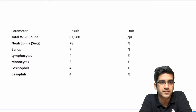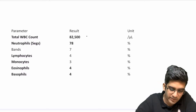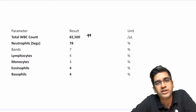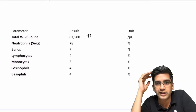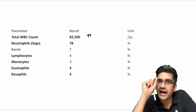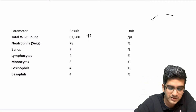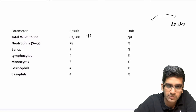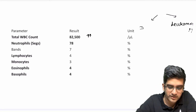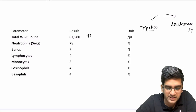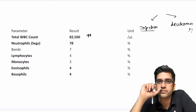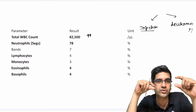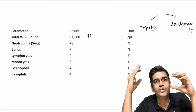The WBC count is definitely elevated — 82,000 is very, very high. The normal WBC count is somewhere around 10,000–11,000 in an adult. So I have one simple question: can this be a cancer, a leukemia? Can it be an infection like sepsis? Both are possible. Normal is 10,000–11,000; going to 82,000 is very, very high.